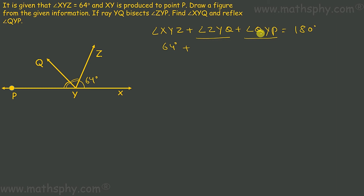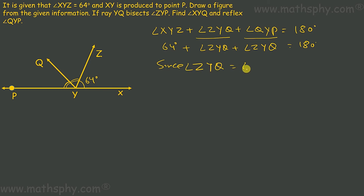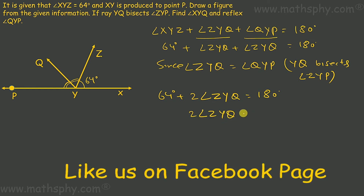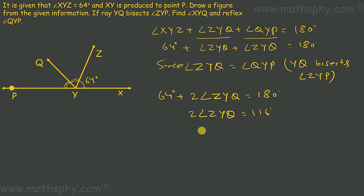Since YQ is bisecting ZYP, angles ZYQ and QYP are equal. So in place of ZYQ and QYP, I'll write angle ZYQ plus angle ZYQ equals 180. So: 64 degrees plus 2 times angle ZYQ equals 180. Therefore 2 times angle ZYQ equals 116 degrees, and angle ZYQ equals 58 degrees. So this angle is 58° and this will also be 58 degrees.